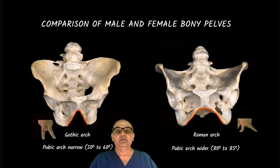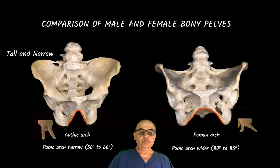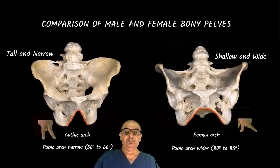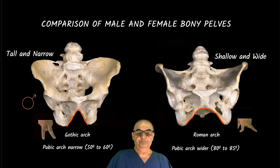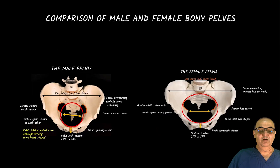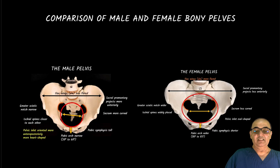The female pubic arch angle ranges from 80 to 85 degrees. The male pelvis is tall and narrow, while the female pelvis is shallow and wider. These are the differences seen within the comparative models — these are the real pelves of a male and a female. You can put them side by side and look at the differences in texture and design: how everything is coming closer in the male and going further apart in the female.